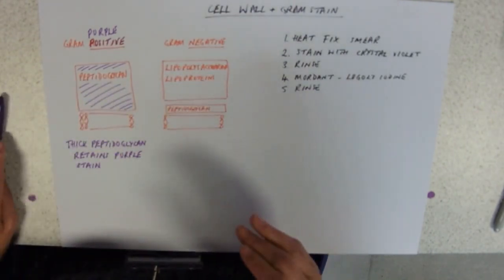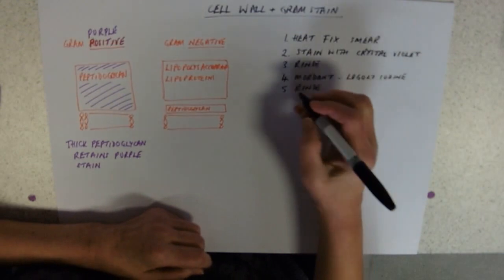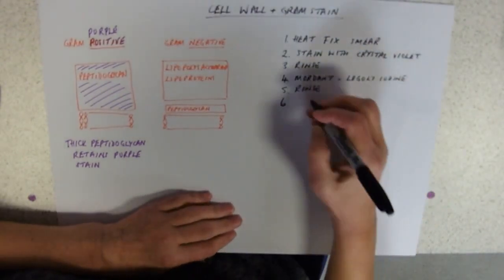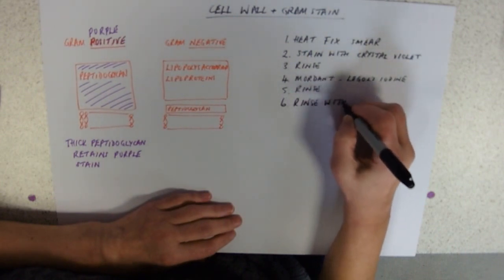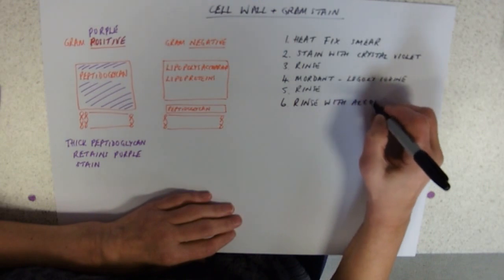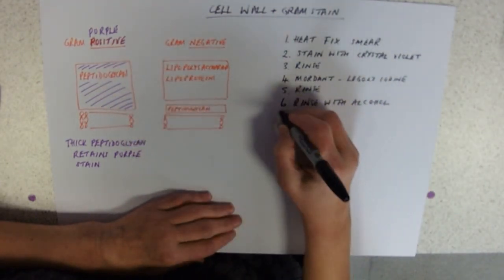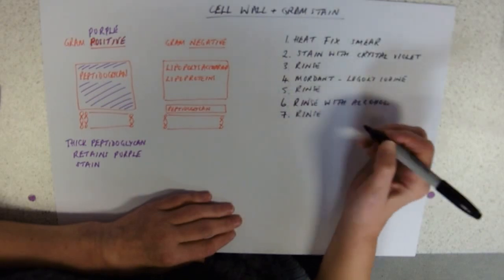The next thing is to do a counter staining procedure. First of all, you need to get rid of all the purple, so you rinse with alcohol. Now you've got to be quick with that, because alcohol will also take out the purple stain and you'd get a false gram negative. So you're going to rinse again with water.